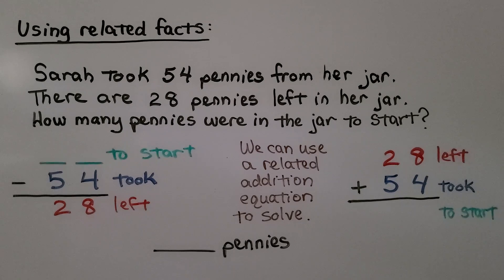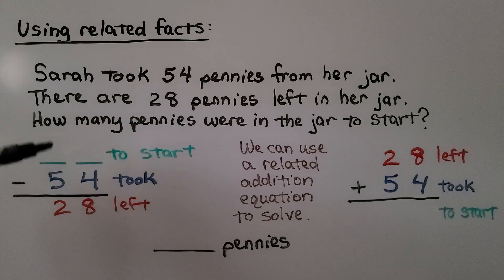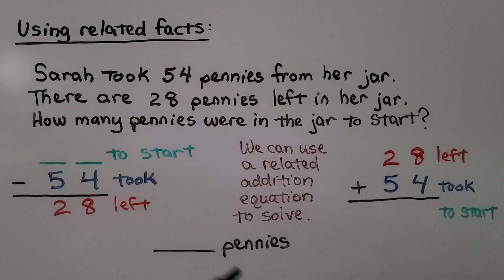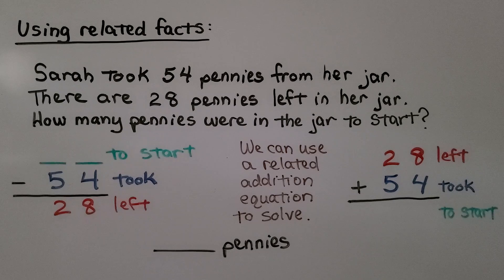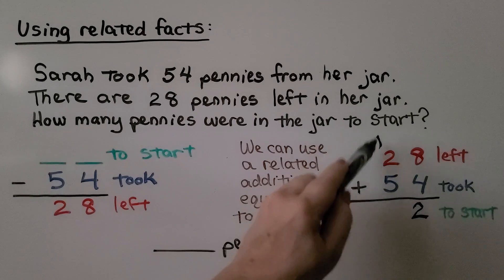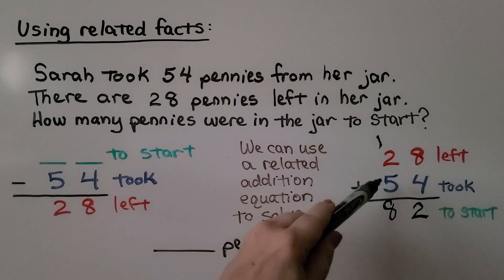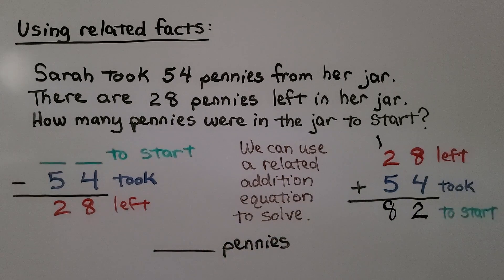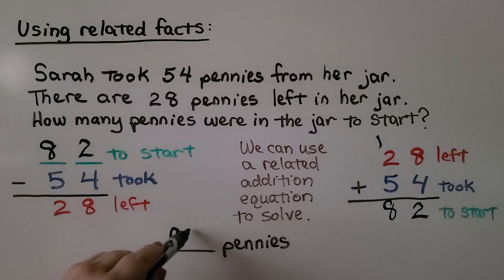We're going to be using related facts. Sarah took 54 pennies from her jar. There are 28 pennies left in her jar. How many pennies were in the jar to start? She had some unknown number of pennies, took away 54, and now there are 28 left. So we can use a related addition equation to solve this. If we add 54 and 28, that's going to tell us how many she had to start. We look at the ones place: 8 plus 4 is 12. We regroup a 10 to the tens place and put the 2 in the ones place. Then we add the tens: 5, 6, 7, 8. We know she had 82 pennies to start.